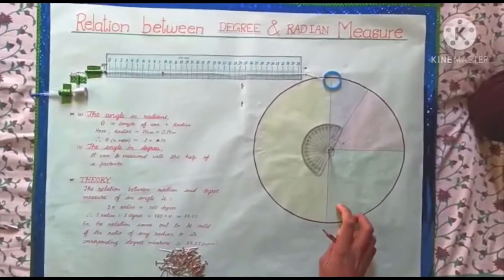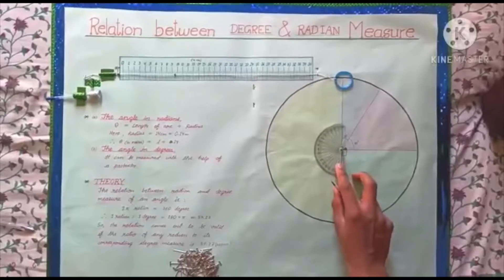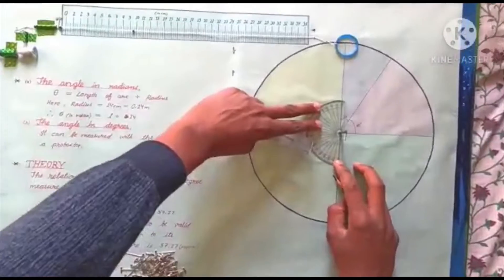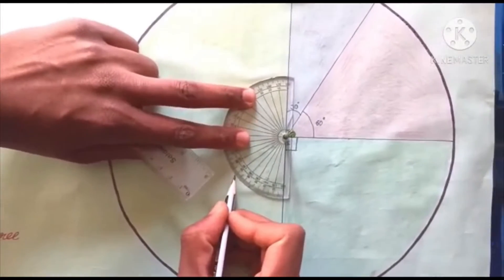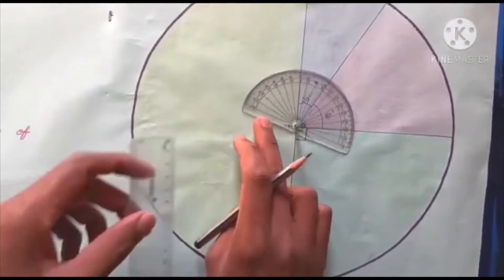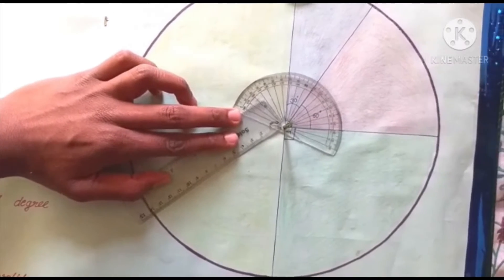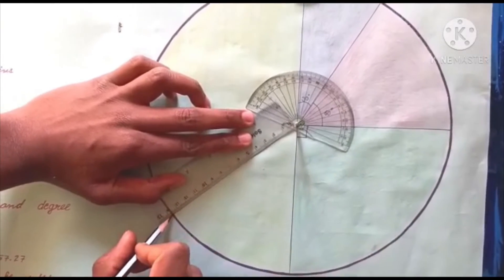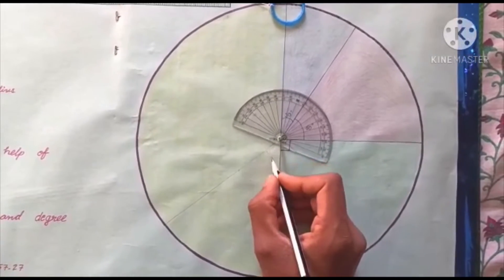Let's now try to show the relation between degree and radian for 50 degrees. So we measure 50 degrees with the help of the protractor. Now we join the center of the circle to the arc at 50 degrees. This angle measures 50 degrees.